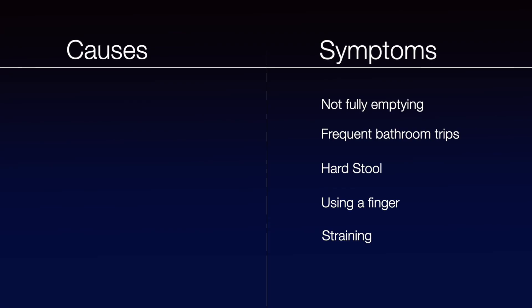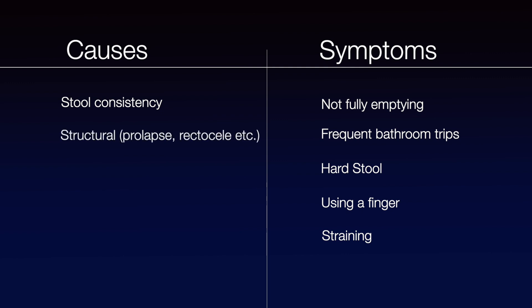This can happen when there are structural or functional problems that prevent easy passage of stool. Some difficulties are caused by problems with stool consistency, where it may be too hard or too soft — in these cases, dietary changes with increased fibre and water intake is often helpful. Structural problems, such as rectal prolapse or damage to the pelvic floor muscles, can arise during pregnancy, childbirth or for other anatomical reasons. Problems with the coordination of nerves and muscles around the back passage can disrupt the normal process of defecation. This is called dyssynergia, and we will discuss these points in more detail in our next video.